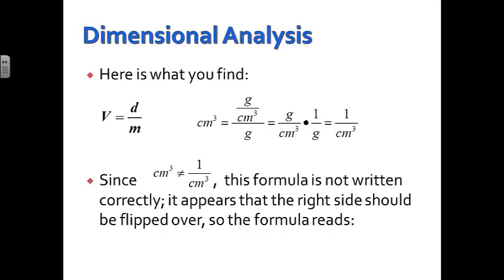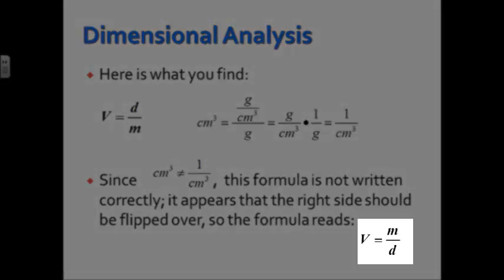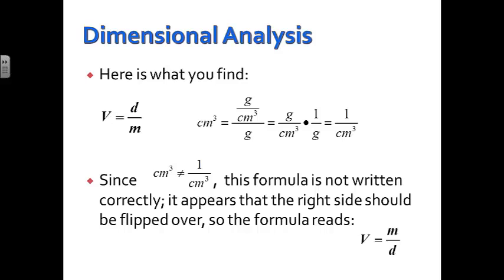However, if you look, the only thing is the right side needs to be flipped over. So if we flip that over, the formula would then read volume is equal to mass over density. Then we would have cubic centimeters equals cubic centimeters, and we'd know that we'd set the problem up correctly, and this is the way the formula should actually look.